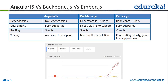AngularJS doesn't need any other dependencies. If you see BackboneJS or EmberJS, they need jQuery, UnderscoreJS, and HandlebarsJS. But in AngularJS there is no dependency — it will work alone in your application. Just the AngularJS plugin itself is more than enough to build a client-side application.